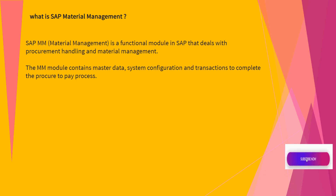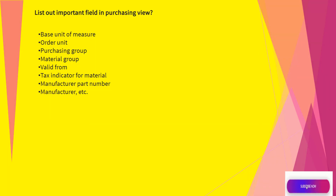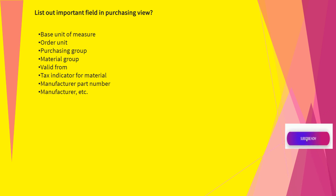What is SAP Material Management? SAP MM, Material Management, is a functional module in SAP that deals with procurement handling and material management. The MM module contains master data, system configuration, and transactions to complete the procure-to-pay process. Important fields in the purchasing view include: base unit of measure, order unit, purchasing group, material group, valid from, tax indicator for material, manufacturer part number, and manufacturer.